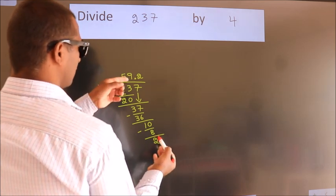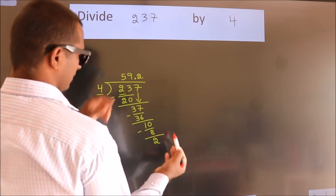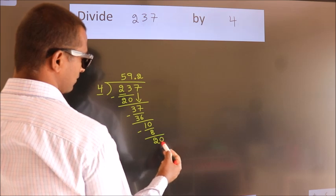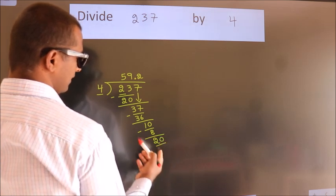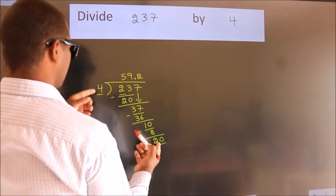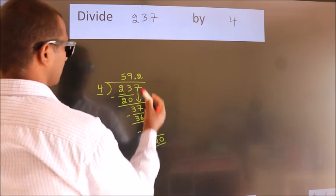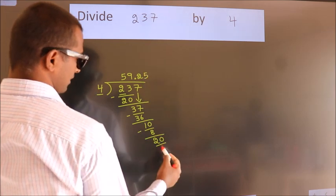After this we already have the decimal. So directly take 0. So 20. When do we get 20? In 4 table. 4 5s 20.